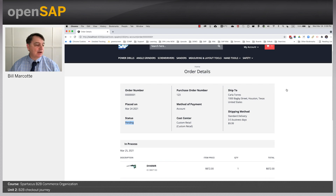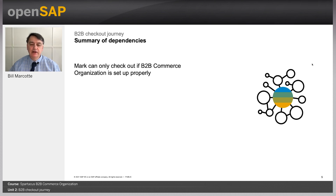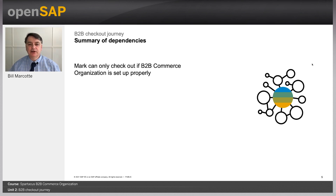The only reason Mark was able to check out is because the commerce organization was set up properly. You had to create the unit hierarchy and create Mark the buyer, and Mark had to be assigned spending limits — if not, all his purchases require approval. The unit has to have a cost center, the cost center has to have a budget. If any of those things are missing, Mark will likely get stuck along the way. For example, if there's no shipping address, Mark will be unable to continue. These things must be configured properly for Mark to check out.